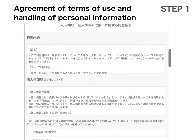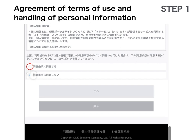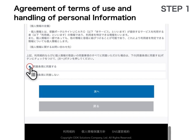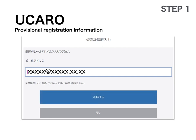Read the terms and conditions and choose the top option, Agree, then proceed to the next step. Enter your email address that you would like to receive emails from the Ukaro system for further processing of registration, then click the blue button Send. The system will then send an email to you.